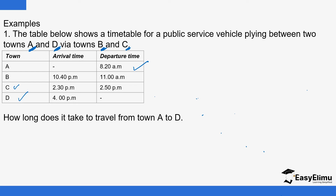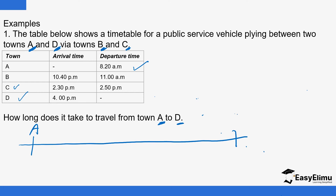Let's see how we interpret this. The question is: how long does it take to travel from A to D? You are most interested in the departure time at A and the arrival time at D — basically the time difference. So here we have A and D. The departure time, shown in this column, at A is 8:20 AM.